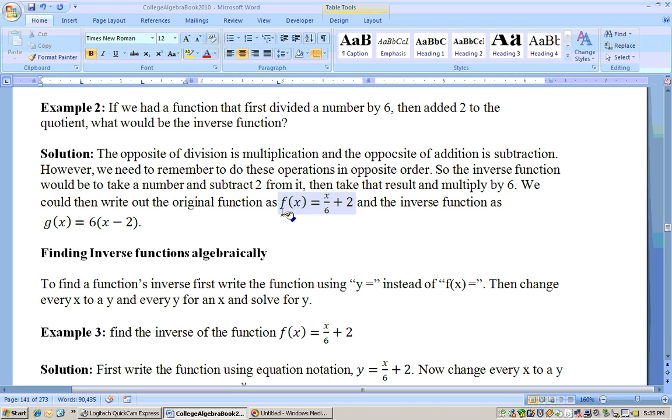If you would find f of g of x, what do you think you would get? X. And what do you think you would get if you did g of f of x? X. You got it. Because these two functions are inverse functions, that means when you composite them together, substitute one into the other, you're going to simplify and get x every time. We'll stop it right there and pick up with this section on the next video. Thank you.